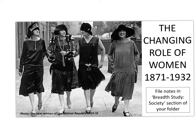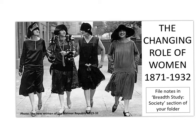Today's lesson is the changing role of women for pretty much the first half of the period we're looking at. We're focusing on German women between 1871, which is the beginning of the Kaiserreich or Second Reich, all the way up to 1932, the last full year of the Weimar Republic. This is a breadth study society topic, so make sure you file notes into that section of your folder.